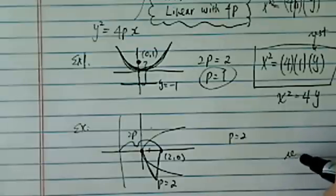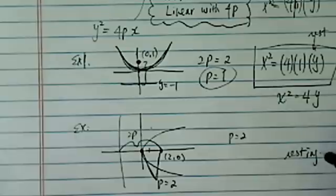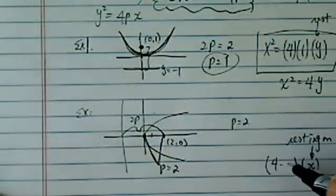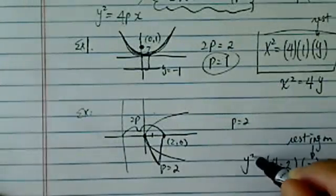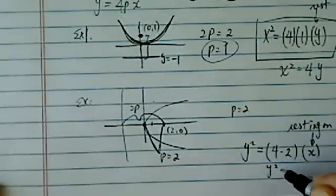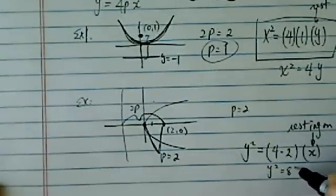Again, the curve is resting on x direction, so put x in there, and then put a 4p in front, so it's 4 times 2, and then leave y squared. So in our end, the equation for this one is y squared equals 8x.